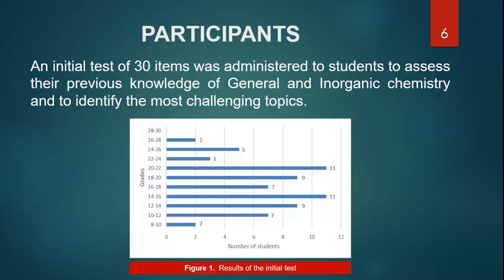An initial test of 30 items was administered to students to assess their previous knowledge of general and inorganic chemistry and to identify the most challenging topics. The results showed that the greatest percentage of students got a score between 14 and 20, with few excellences but none below 8 points.